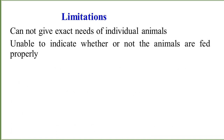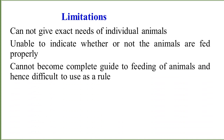Feeding standards are unable to indicate whether or not two animals are fed properly — this is a major limitation. While providing animals food according to a specific standard, we may not be able to determine whether the animals are fed properly, whether they are satisfied, or whether they are able to access food properly. Similarly, the standards cannot become a complete guide to the feeding of animals and hence are difficult to use as a ruler.